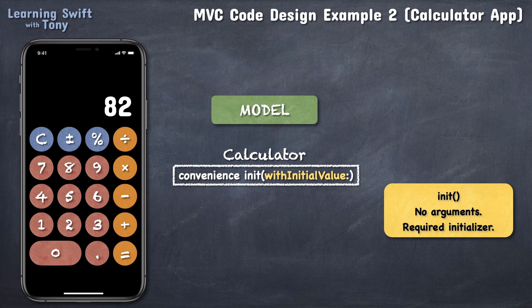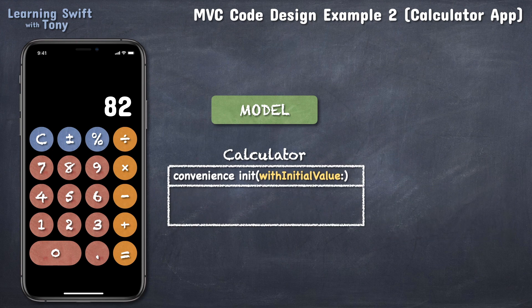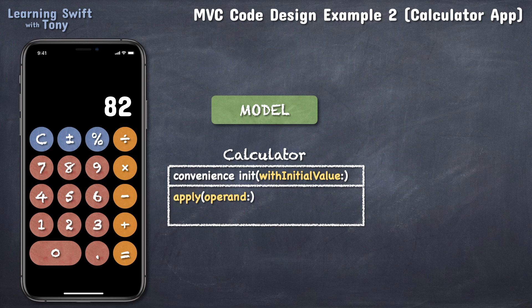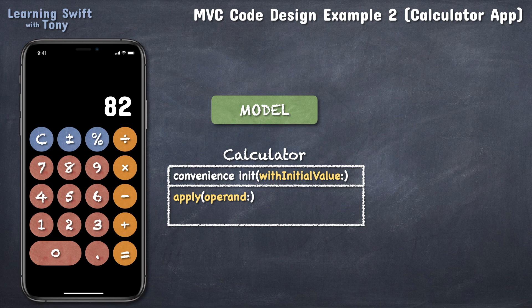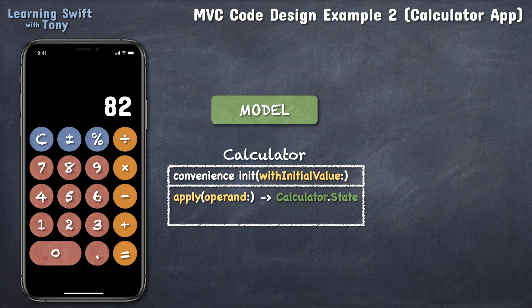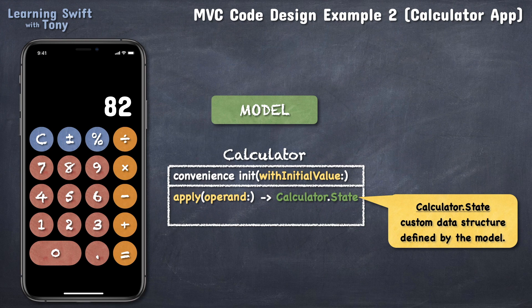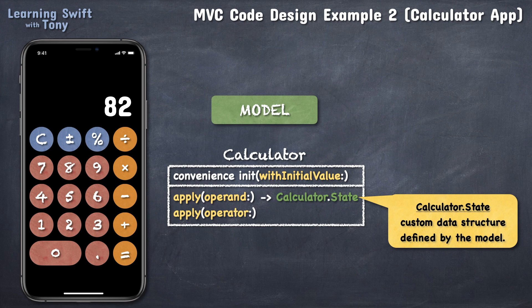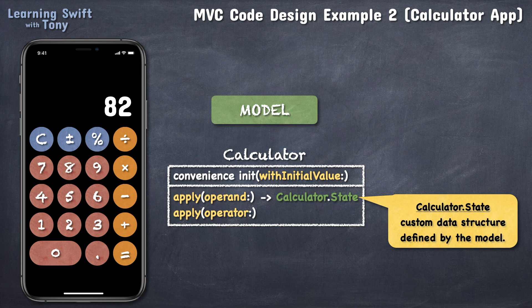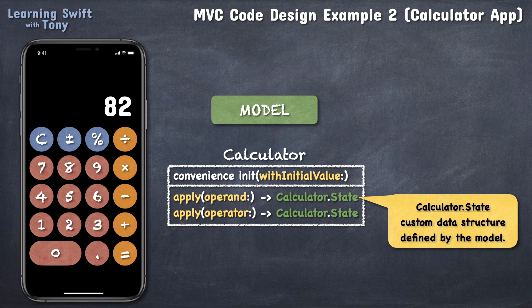Alright, once we have an initialized calculator object, we can start thinking about the functions that it will do. One that comes to mind is to take in an operand, such as a 1 or a 2 or any other digit. It will digest this operand and, based on the current state of the calculator, it will return a new state, let's call it a calculator state, which will be a custom data structure we will also have to design ourselves. We won't go into details about this structure in this video, since we are just trying to get a bird's eye view of how the MVC architecture works. A second function needed will be a function that will take in an operator, such as an addition operator or subtraction or any kind of operator we decide to implement. This function will also return a new calculator state after each call. And that's pretty much it for the model.